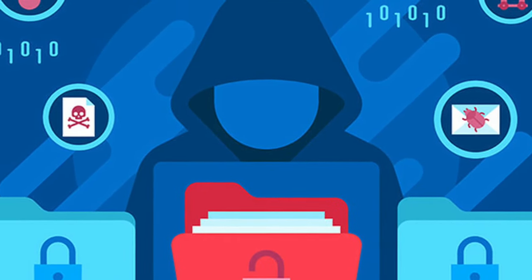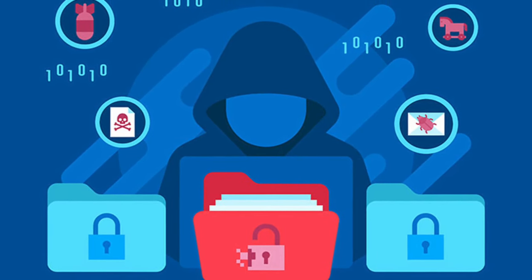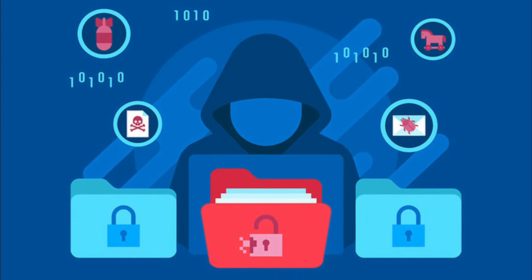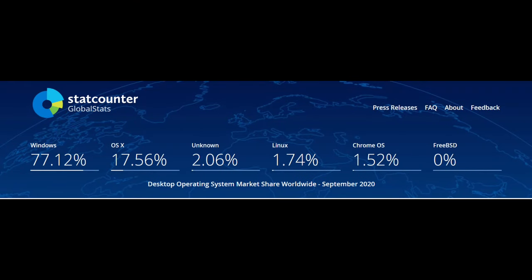Why is there so much malware? The main reason why there is so much malware for Windows is purely because of the amount of people using it. According to gs.statcounter.com, Windows makes up a total of 77.12% of the operating system market, which makes creating malware for any other operating systems apart from Windows a waste of time, as the majority of PC users use Windows — giving malware creators and hackers a very large target.